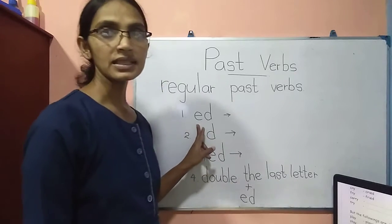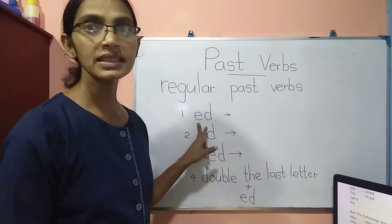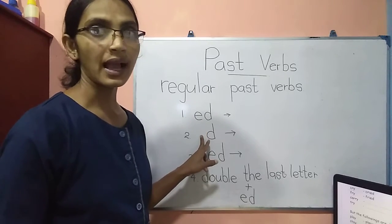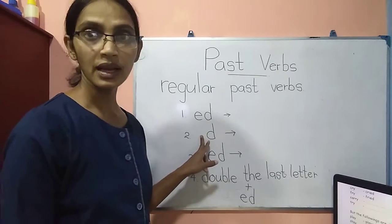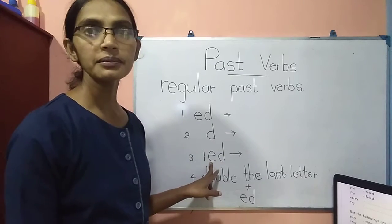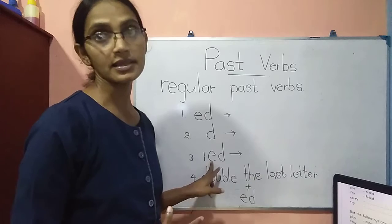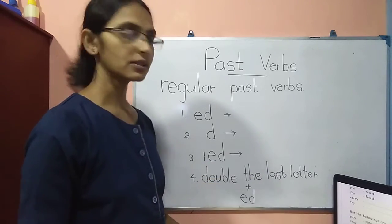The first method is the base method. We add ED to the base verb. Then sometimes we add only D. I'll explain you how to do that. And the third method, adding IED to some base verbs. And there are some more points we have to talk about that.